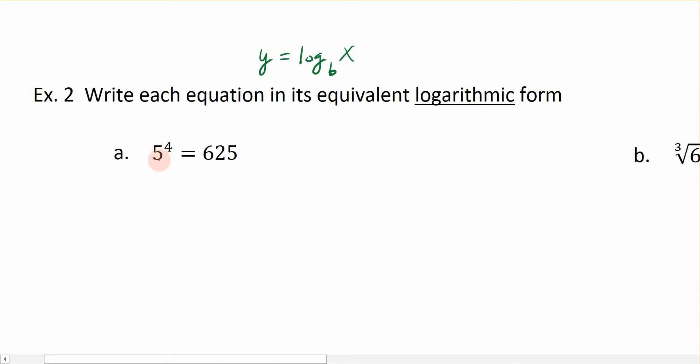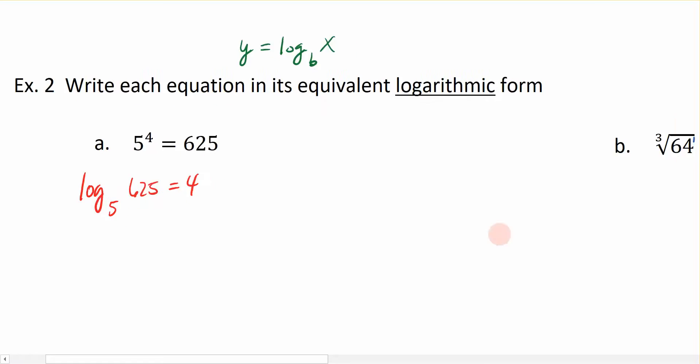Base 5 to the 4th is equal to 625. So I start with the base. This is going to be log base 5 of the argument 625 equals to the exponent 4. So log base 5 of 625 is equal to 4. This is the log form.